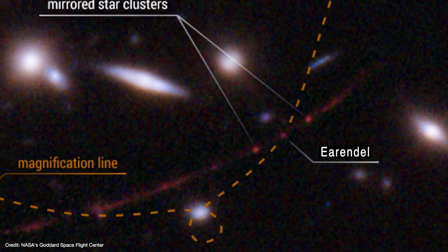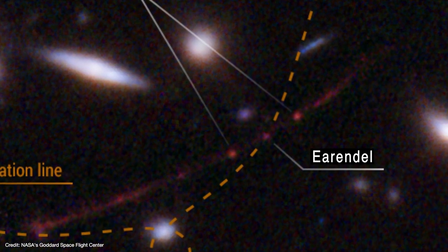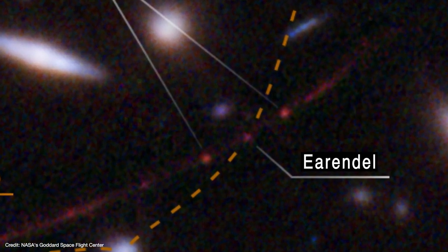For this reason, the team dubbed the star Earendel, which is the Old English word for Morning Star. Okay, there's a lot to unpack here. There's the gravitational lensing, how they figured out the background galaxy's distance, and how they know that this tiny blob of light is actually a star within that galaxy. So let's break this all down.